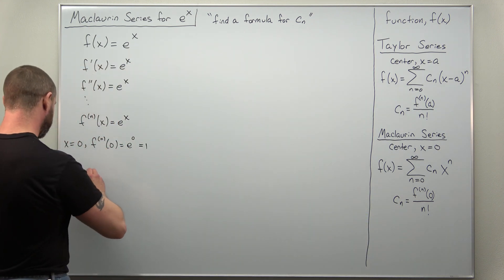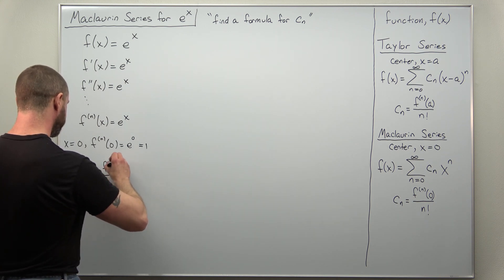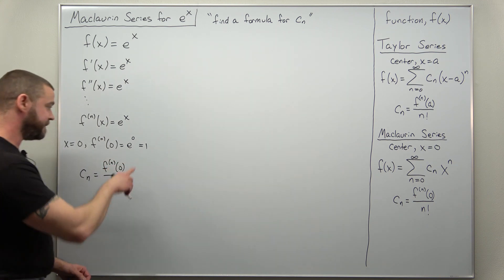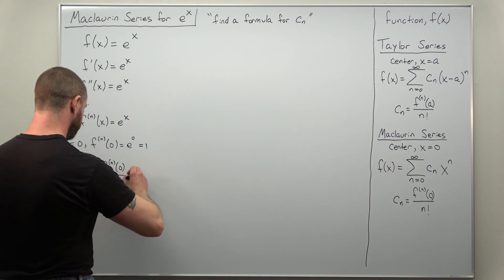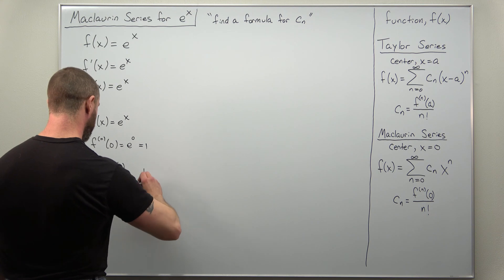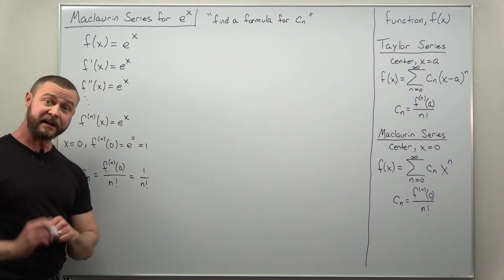So let's go ahead and divide that by n factorial to get our nth coefficient c sub n. It's the nth derivative evaluated at zero divided by n factorial, and if we plug that in we get one over n factorial, and that's it.